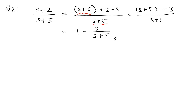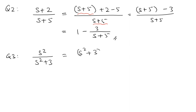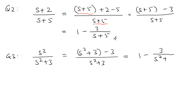Another example: (s² + 3)/(s² + 3). Same argument — recreate the denominator in the numerator, subtract 3 to cancel, leaving (s² + 3)/(s² + 3) − 3/(s² + 3) = 1 − 3/(s² + 3). When we do the inverse Laplace transform, we will see how to use this idea.